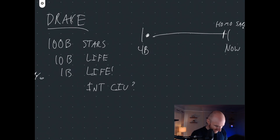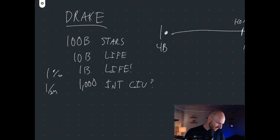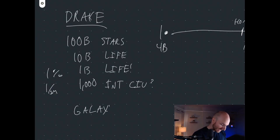Of these billion planets that produce life, maybe one in a million produces an intelligent civilization. One in one million would give us about a thousand intelligent civilizations in our galaxy. This is roughly how you do the napkin math to say: in the Milky Way galaxy — just our one galaxy, and remember there are a hundred billion galaxies — there are about a thousand intelligent civilizations.